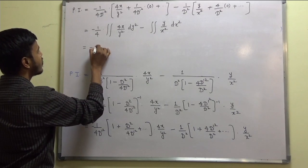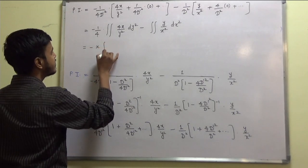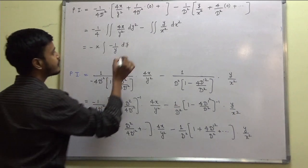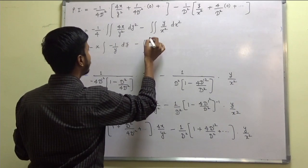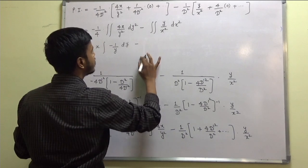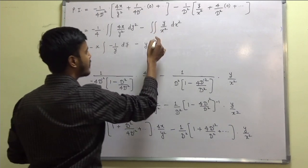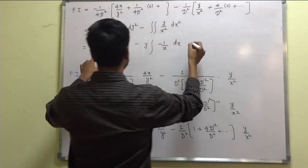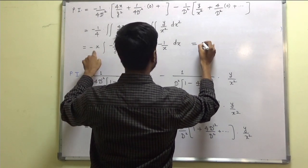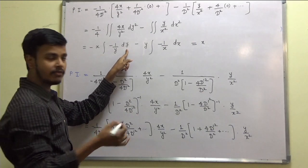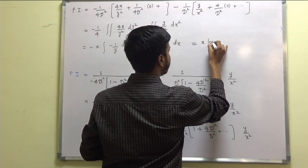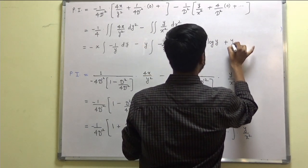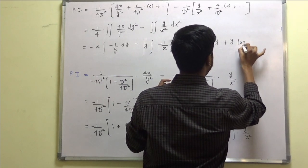This becomes minus 1/4 into double integration of 4x/y² dy² minus double integration of y/x² dx². Taking x outside, the integration of 1/y² with respect to y gives minus 1/y; taking y outside, integration of 1/x² gives minus 1/x. Taking the next integration: minus minus becomes plus, and integration of 1/y is log y. Similarly, plus y times integration of 1/x is log x.